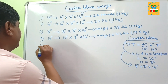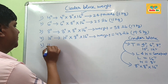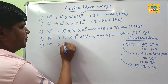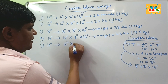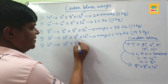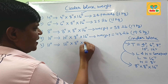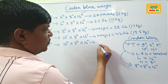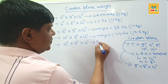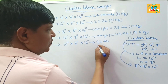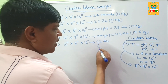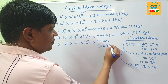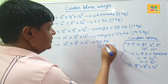The next one is the 12-inch thick cinder block. It is 12 inches thick, 8 inches in height, and 16 inches long. This block weighs around 52 pounds. If you convert to kilograms, it is about 23.5 kg.